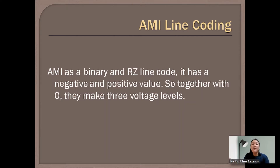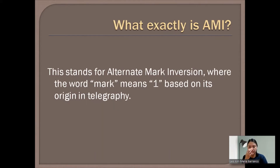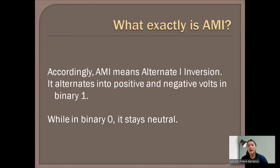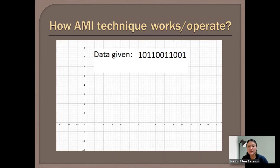The three levels are the positive values, zero, and the negative values. AMI stands for Alternate Mark Inversion, where the word 'mark' means 1, based on its origin in telegraphy. AMI means Alternate 1 Inversion — it alternates between positive and negative volts for binary 1, while for binary 0, it stays neutral.